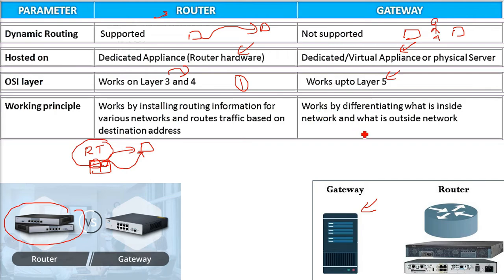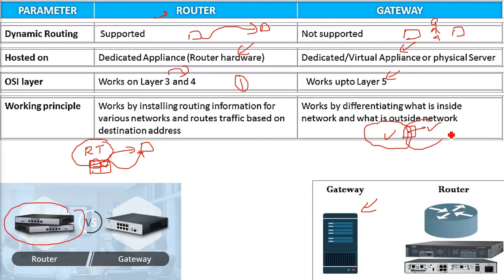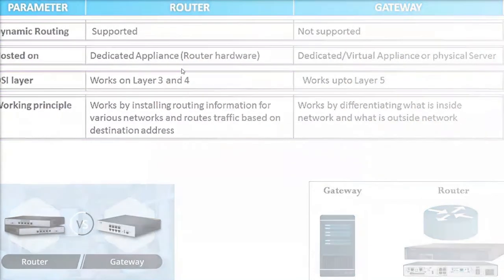The gateway works by differentiating what is inside the network and what is outside. Because there are two different networks with two different protocols, the protocol that does not match with the other is an exit or entry point — and that is where the gateway operates.